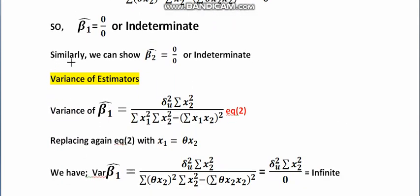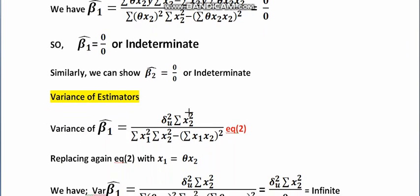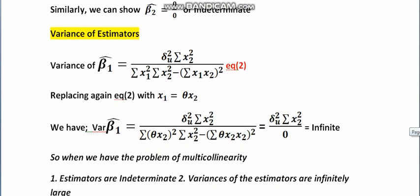Similarly for beta 2 hat, if we replace x2 with the corresponding terms, the numerator becomes summation x1y times summation x2 times summation x1 squared, just changing the subscripts, while the denominator remains the same. If we do that, we also get beta 2 hat equal to 0 over 0, which is indeterminate. We cannot find out the value of the estimators.